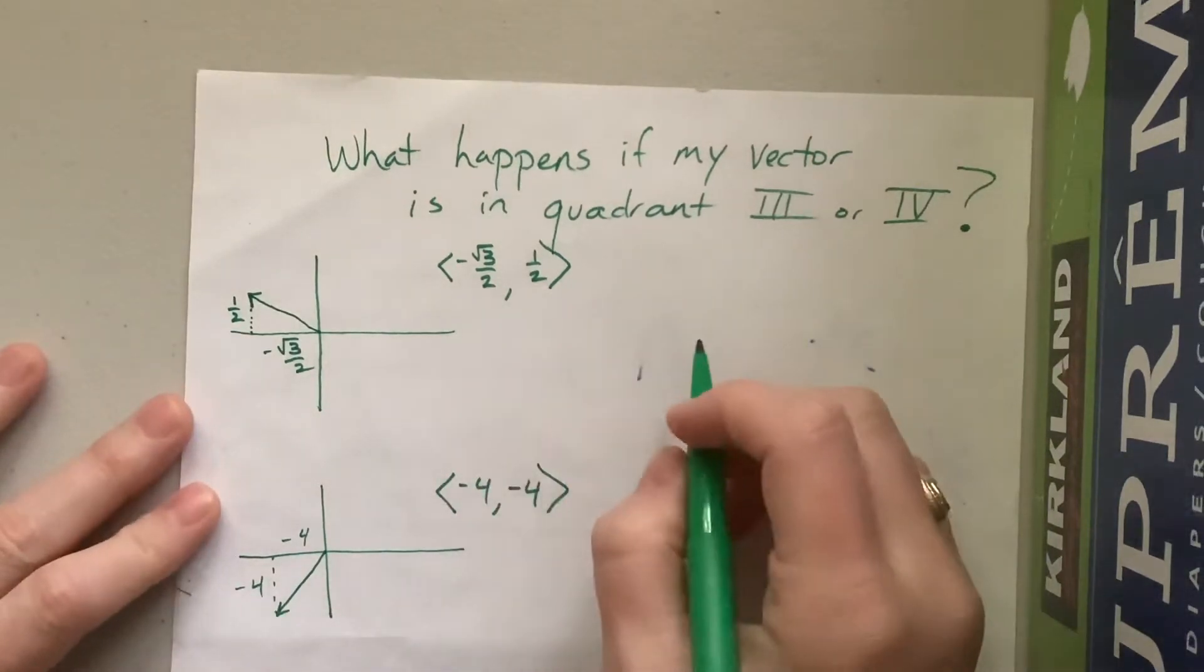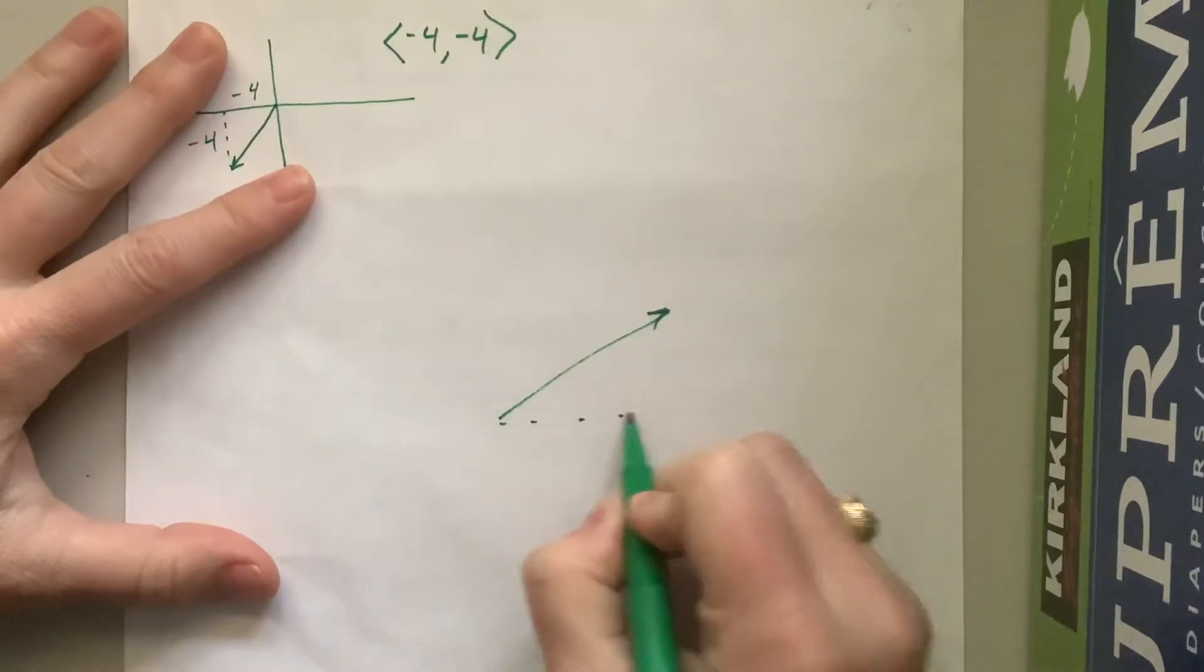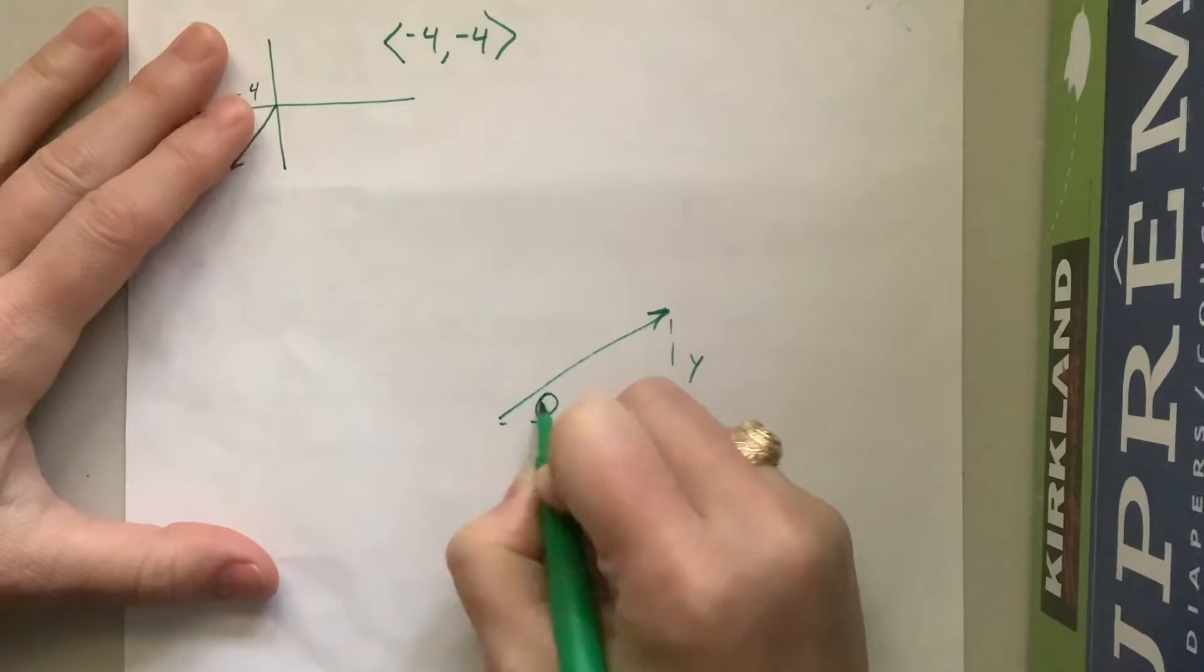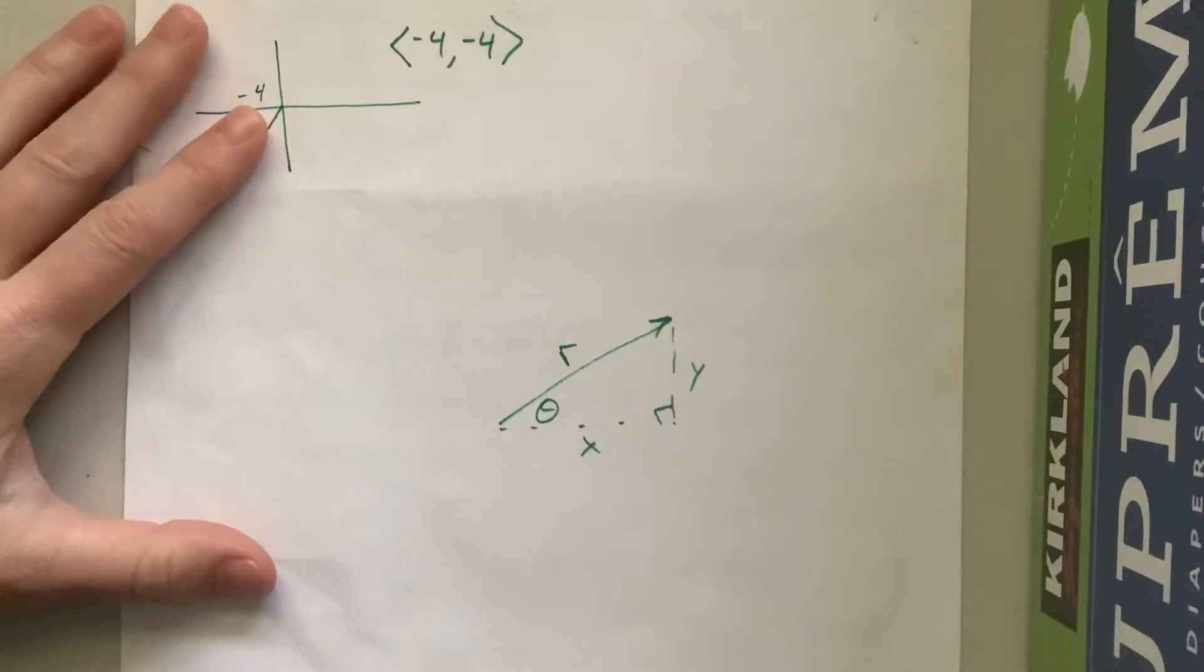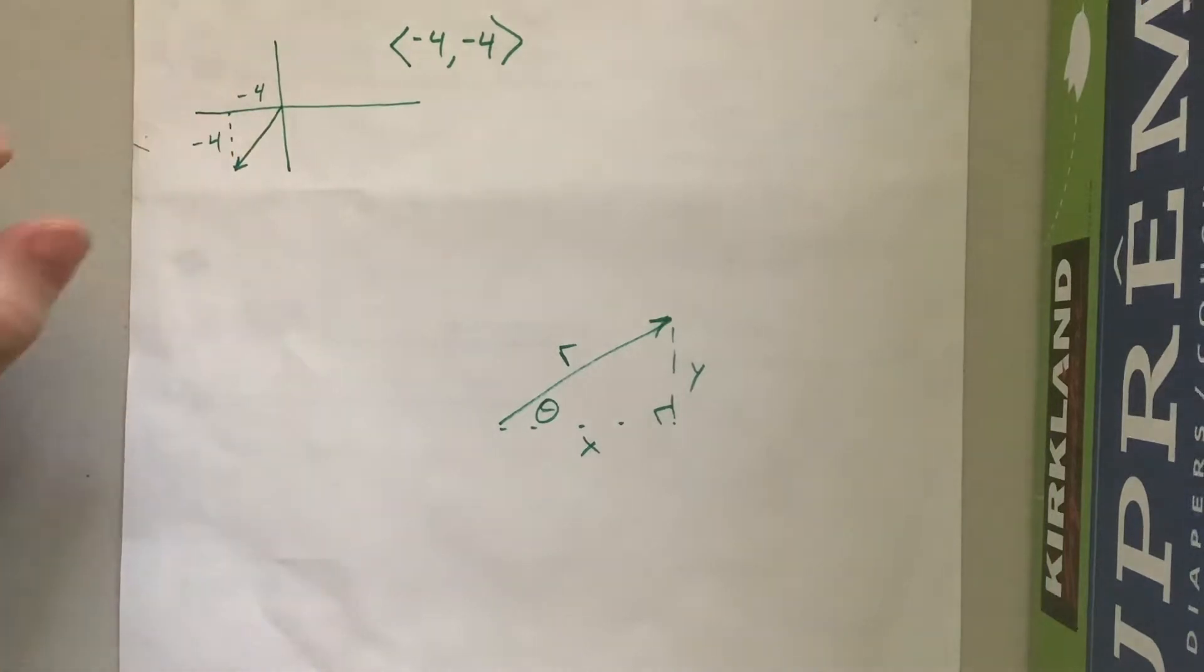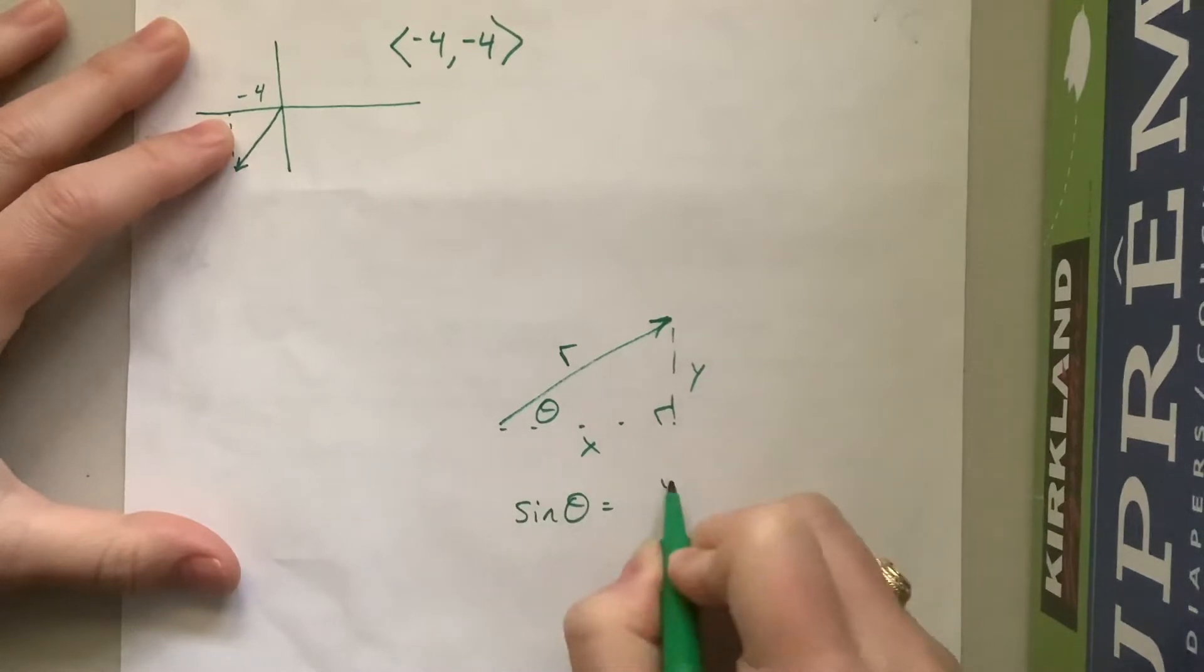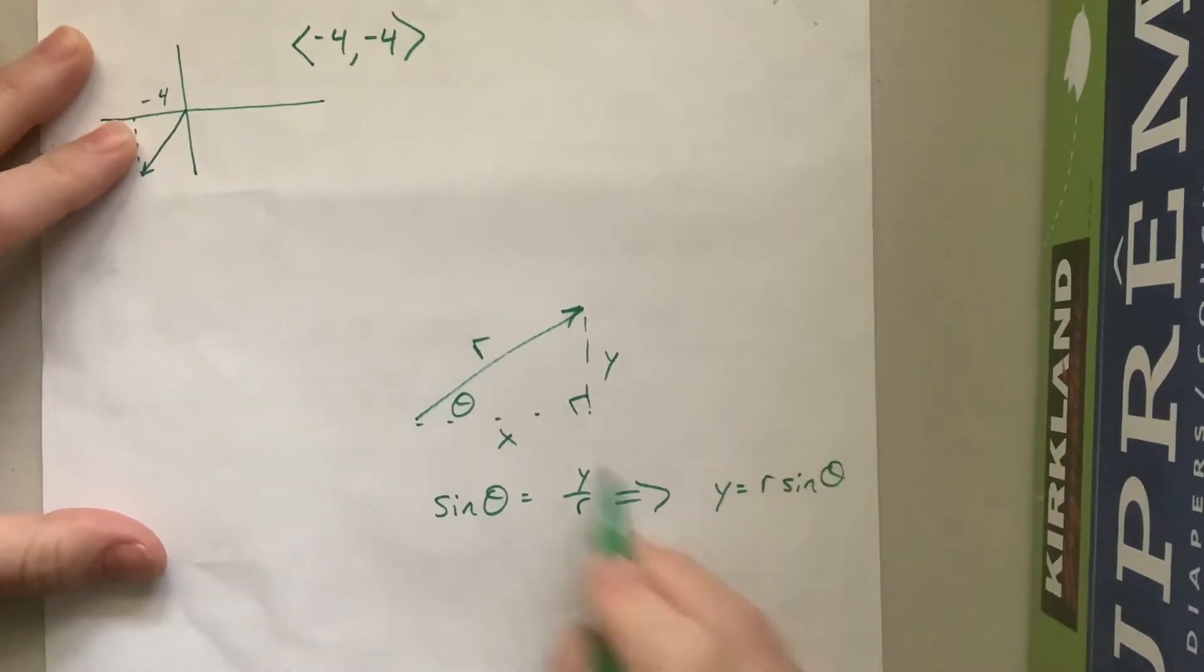So basically we know that in our vector, if this is our vector, here's the x component, here's the y component, that's a right angle. There's the direction, here's the magnitude, sometimes we call that r. When we get to polar, you'll understand a little bit better why we call it r. But what happens is sine of theta is equal to y over r, which implies that y is equal to r sine theta. The magnitude of the vector times sine of the theta is equal to the y component.